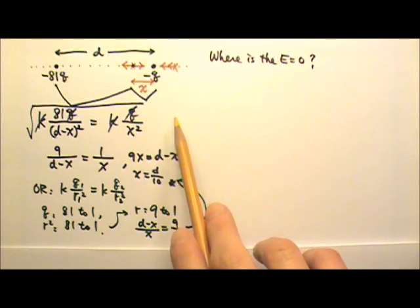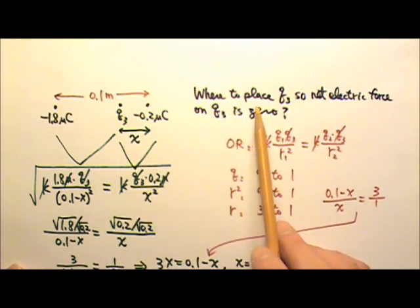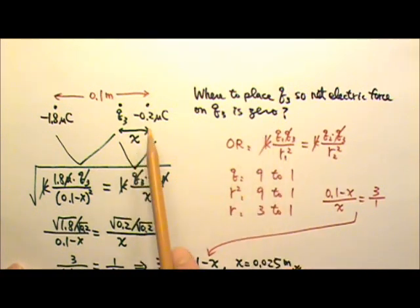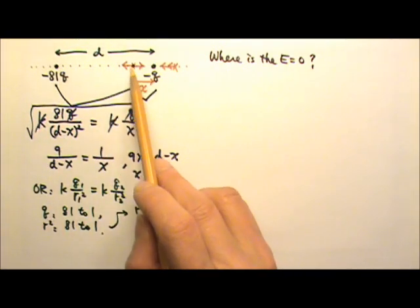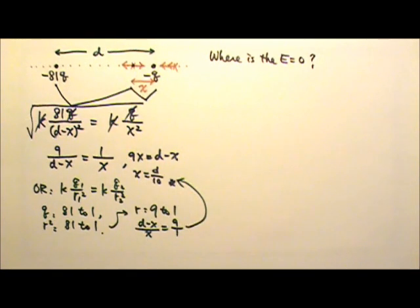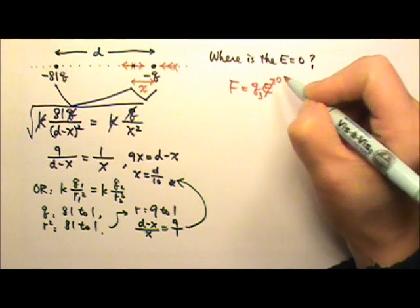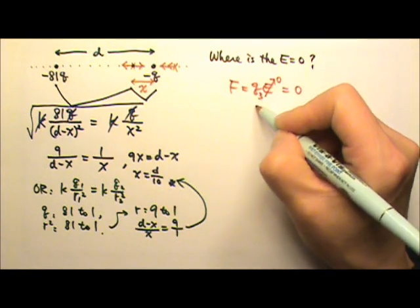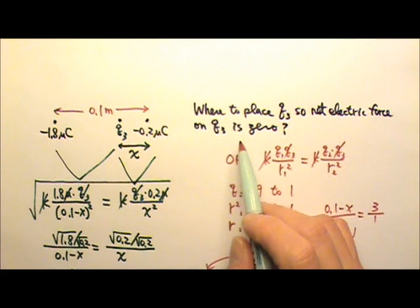This type of problem is the same as one from the sixth static electricity lesson, where the problem asks for a location to place a third charge q3 such that the net electric force on q3 is zero. The net electric field is zero at this location, so if we place q3 here, the net force is F = qE — placing q3 in a zero electric field means the net force on q3 is zero, regardless of the type or magnitude of q3.